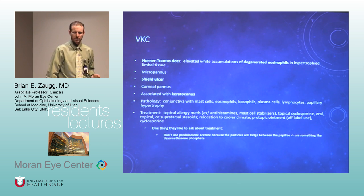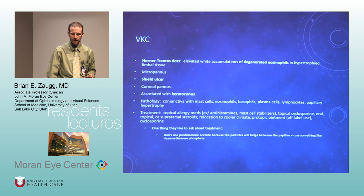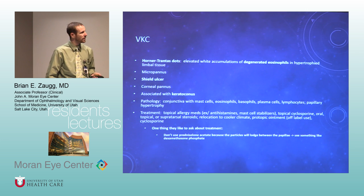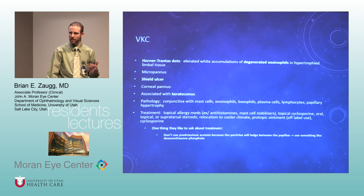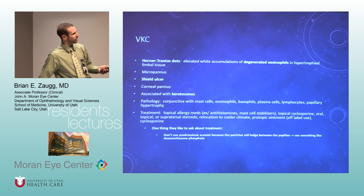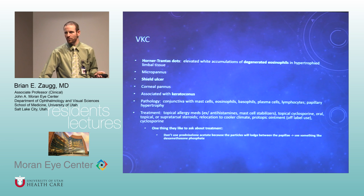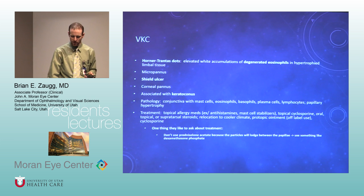The pathology in VKC has a bunch of mixed inflammatory cells. You treat systemically and topically with antihistamines and mast cell-stabilizing combinations. With VKC and AKC, I try to get them to an allergist, because desensitization with shots can help. When you have big papillae, predacetate has precipitates that can get caught between ridges and cause more inflammation, so dexamethasone is a better drug for it.